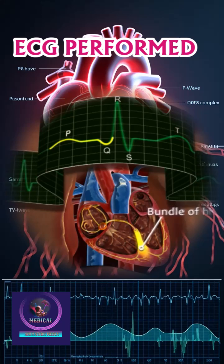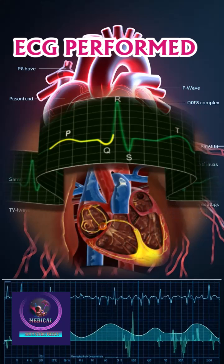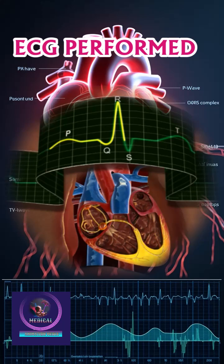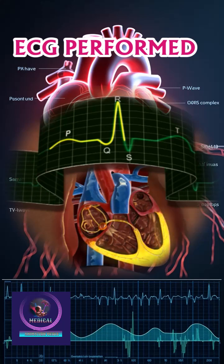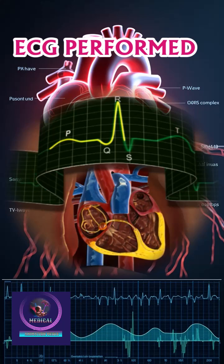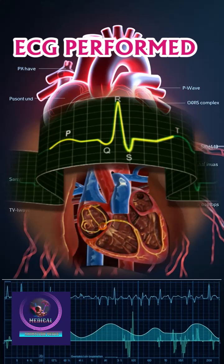The R wave is a large upward spike representing the depolarization of the ventricular muscles. The S wave follows and completes the QRS complex, representing the final depolarization of the ventricles. The T wave is a moderate upward wave that shows the repolarization, or recovery phase, of the ventricles.